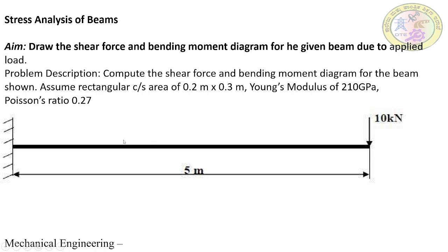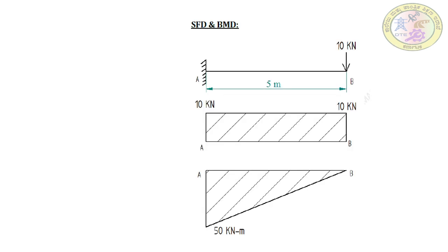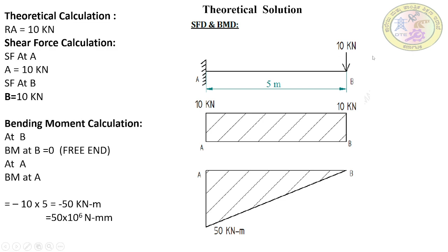Let us move to the theoretical calculation. First we need to calculate the shear force. For calculation purposes we are labeling the free end as B and the fixed end as A. Since we have one load at B and a fixed end at A, we are making two divisions. The shear force is the sum of all loads to the left or right of the section.